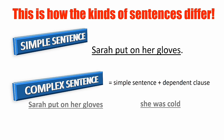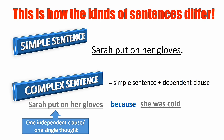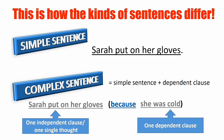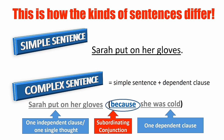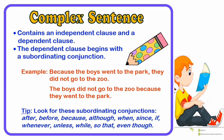The conjunction 'because' joins the independent clause with the dependent clause. Again, a complex sentence contains an independent clause and a dependent clause. The dependent clause begins with a subordinating conjunction. Example: 'Because the boys went to the park, they did not go to the zoo.' Or: 'The boys didn't go to the zoo because they went to the park.'